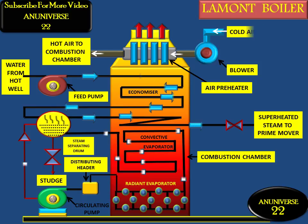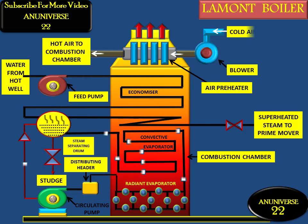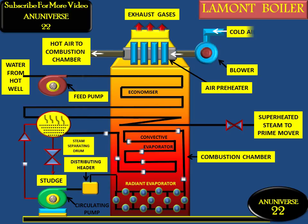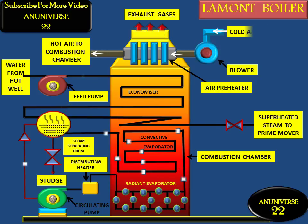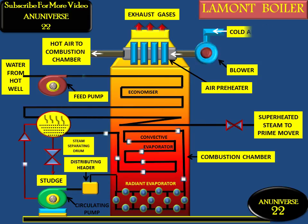Cold air enters and, with the help of the blower, is heated by the flue gases before going to the combustion chamber. Finally, the exhaust gases go to the atmosphere. The gases from the superheater are again used to preheat the air in the air preheater before being exhausted to the atmosphere.